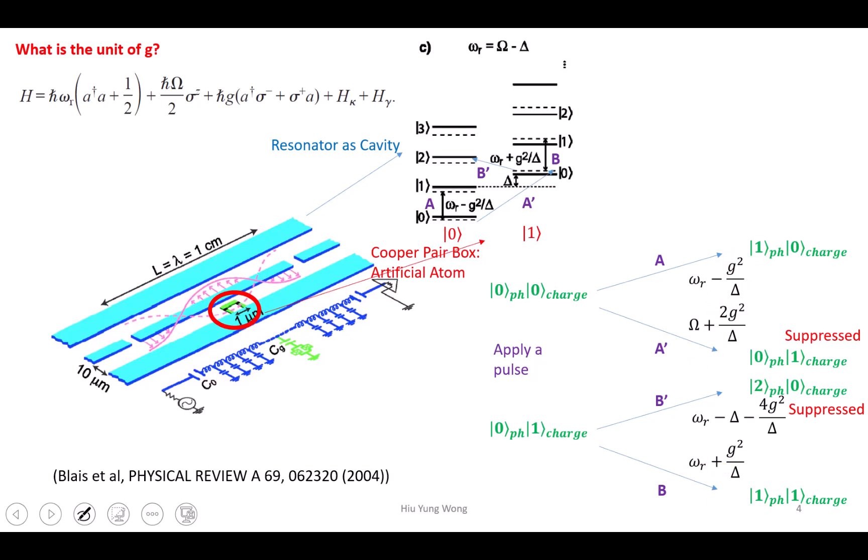If we don't care about the two pi, hertz, right? Let me just call it hertz to make it simple. Then the unit of g squared divided by delta must also be hertz, because you are doing subtraction. But what is delta? Maybe you forgot. Delta itself is the difference between the qubit and the cavity resonant frequency.